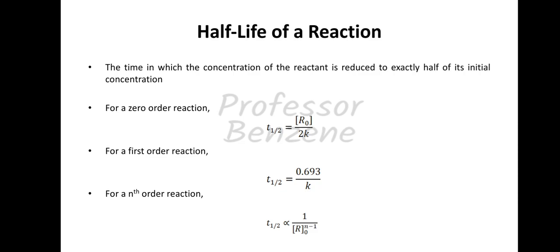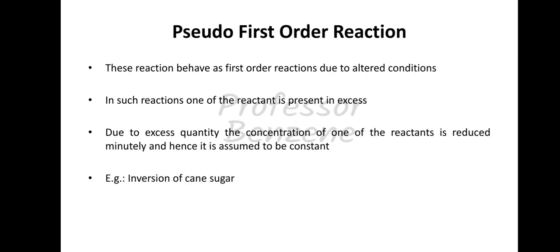Next comes pseudo-first-order reactions. These reactions behave as first order reactions due to altered conditions. A pseudo-first-order reaction is not actually a first order reaction, but behaves like one. In such reactions, one of the reactants is present in excess. Due to its excess quantity, the concentration of that reactant changes only minutely and hence is assumed to be constant. This is why the order of the reaction becomes 1, because the rate depends only on the concentration of the other reactant. An example is the inversion of cane sugar.